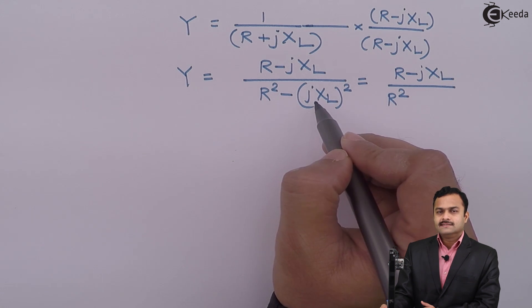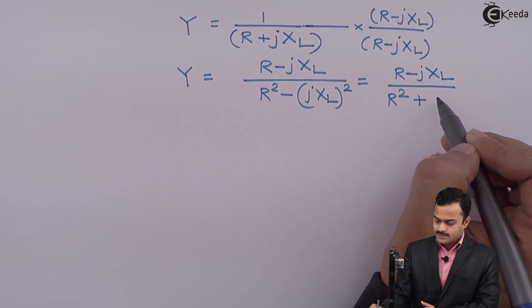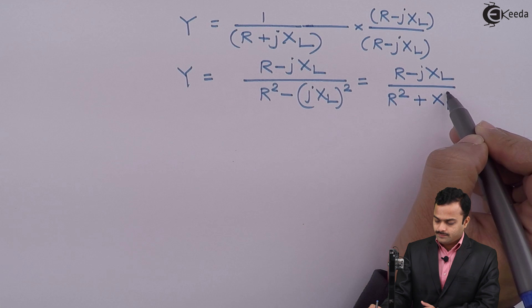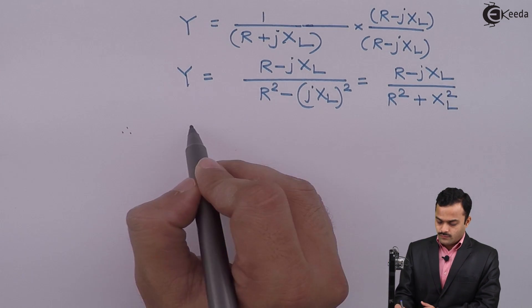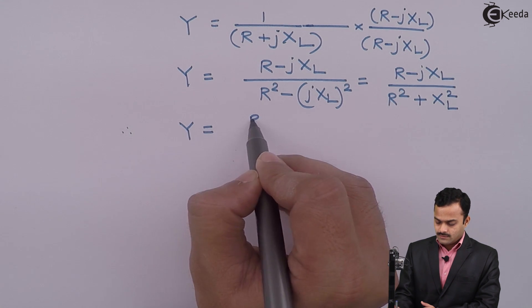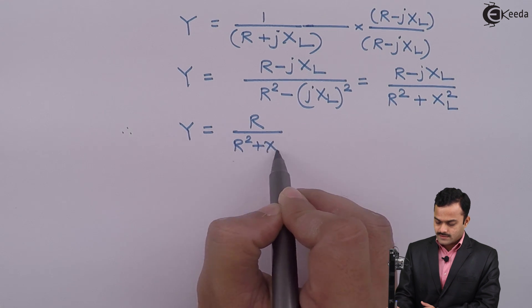If I square j, I will get j², and j² is -1, so that minus times minus will become plus. It will be plus XL². So Y, I can write this as (R - jXL)/(R² + XL²).